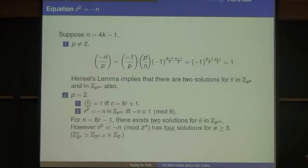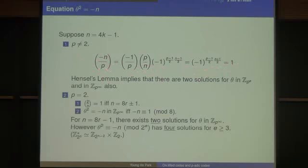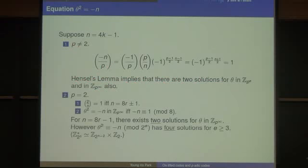Then theta equals plus or minus (lambda minus mu), and lambda can be solved as (theta minus 1) over 2 and mu as (minus theta minus 1) over 2. So lambda, mu, and theta determine each other in Z_p-infinity. This equation theta^2 equals minus n is always solvable because, when p is not equal to 2, the Legendre symbol of minus n over p is 1, showing that minus n is a square mod p. We can then use Hensel's lemma to ensure there are two solutions theta in Z_p-infinity for p not equal to 2.